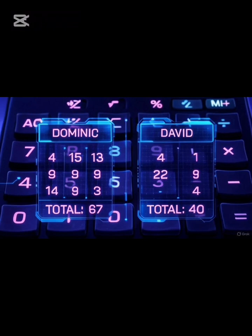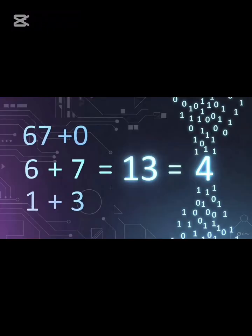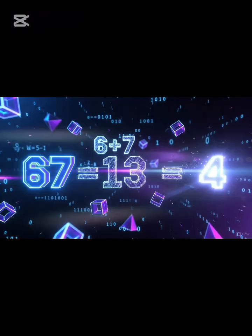Could these numbers reveal something deeper about your name? Let's simplify this using a math trick called modular arithmetic. We add the digits until we get one final number — your name's core code. For Dominic, 6 plus 7 equals 13, then 1 plus 3 equals 4. For David, 4 plus 0 equals 4. Wow, both names reduce to 4. Different letters, same final number.